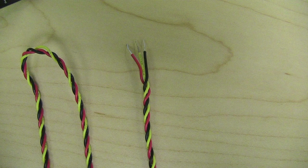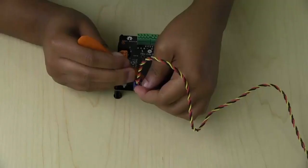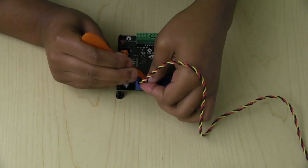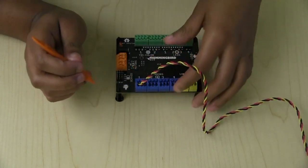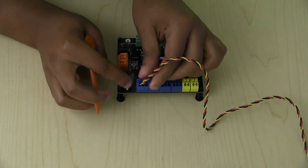A yellow signal wire, a red power wire, and a black ground wire. The yellow wire connects to a sensor port S terminal, the red wire to the plus terminal, and the black wire to the negative terminal.